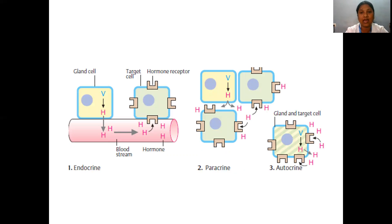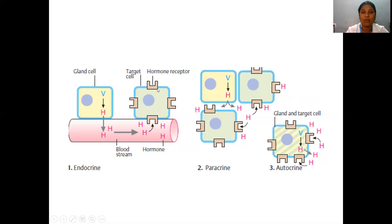Here we can see a diagram of what has been discussed. The first diagram is endocrine, where the gland cell secretes the hormone and this hormone enters into the bloodstream. Through the bloodstream, once it reaches the desired target cell, the target cell has specific receptors for the hormone, so the hormone can bind to these receptors in the target cell and bring about the desired effect.